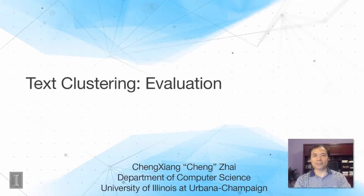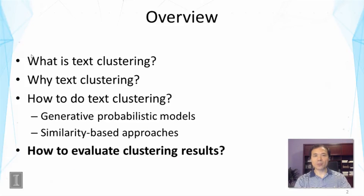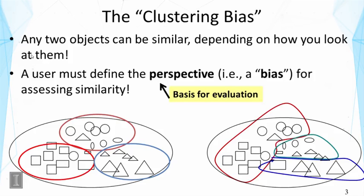This lecture is about evaluation of text clustering. So far we have talked about multiple ways of doing text clustering, but how do we know which method works the best? To talk about evaluation, one must go back to the clustering bias introduced at the beginning, because two objects can be similar depending on how you look at them. We must clearly specify the perspective of similarity — without that, the problem of clustering is not well defined. This perspective is also very important for evaluation.